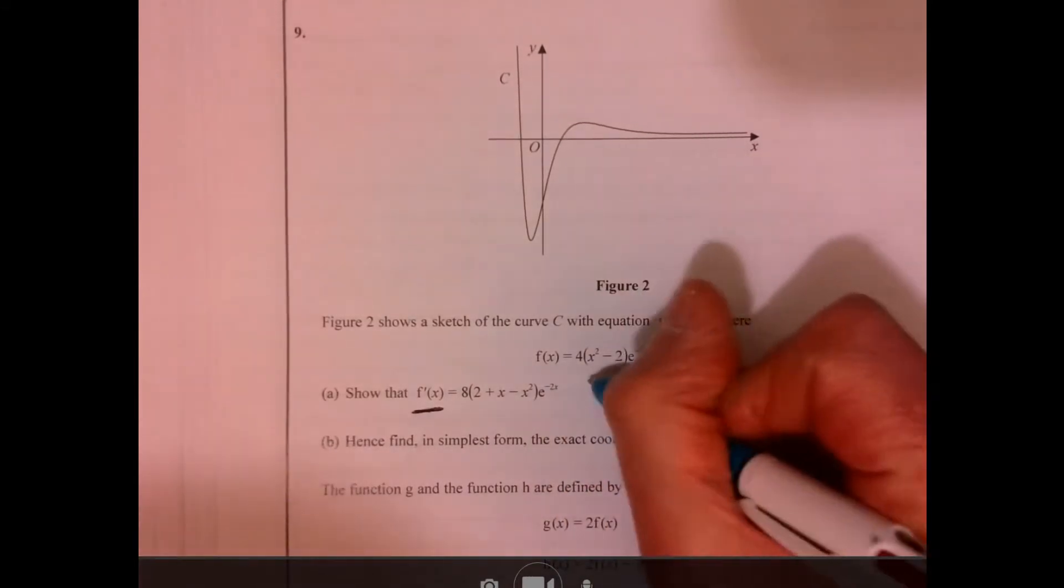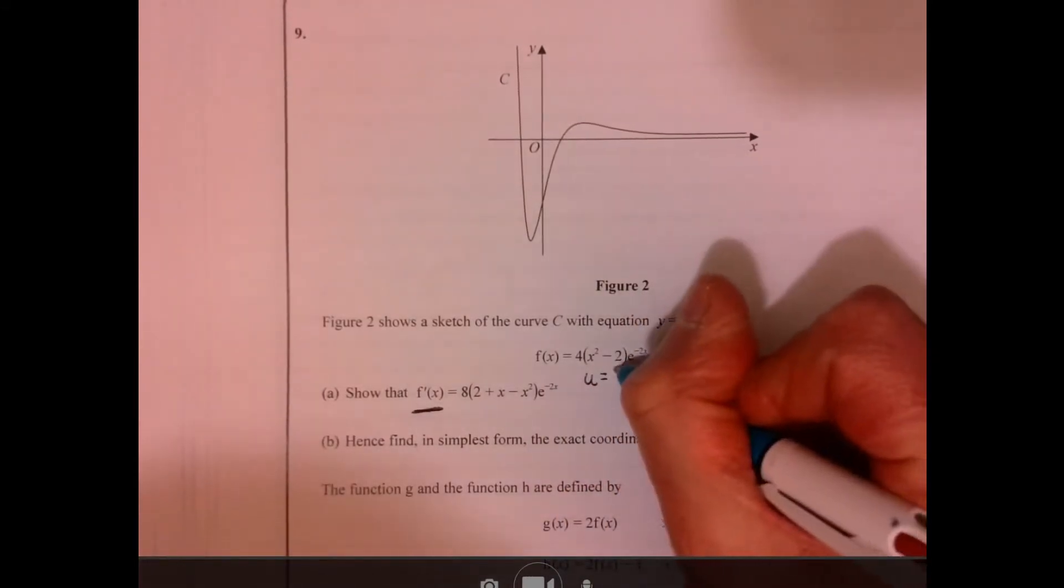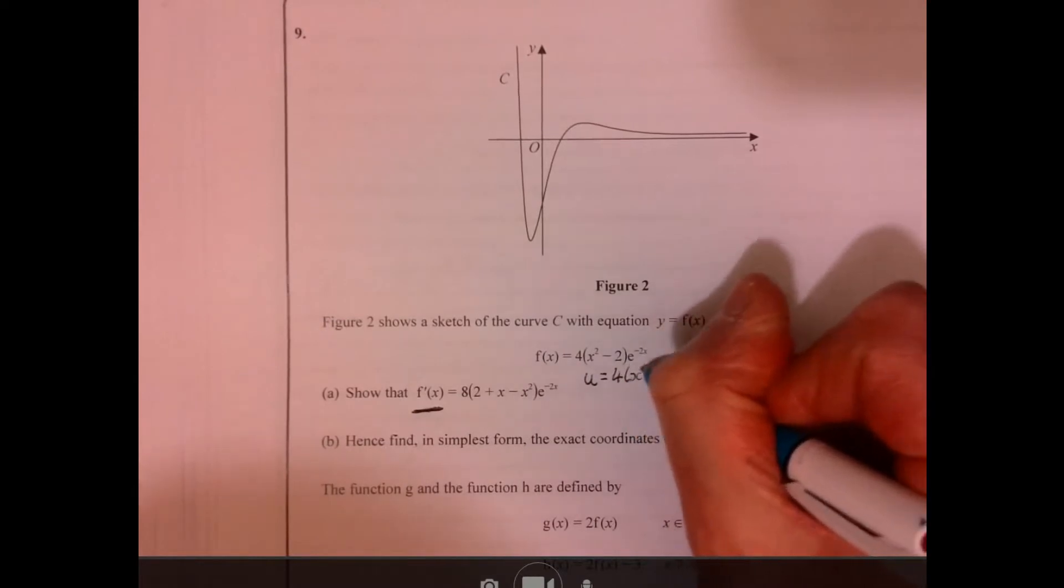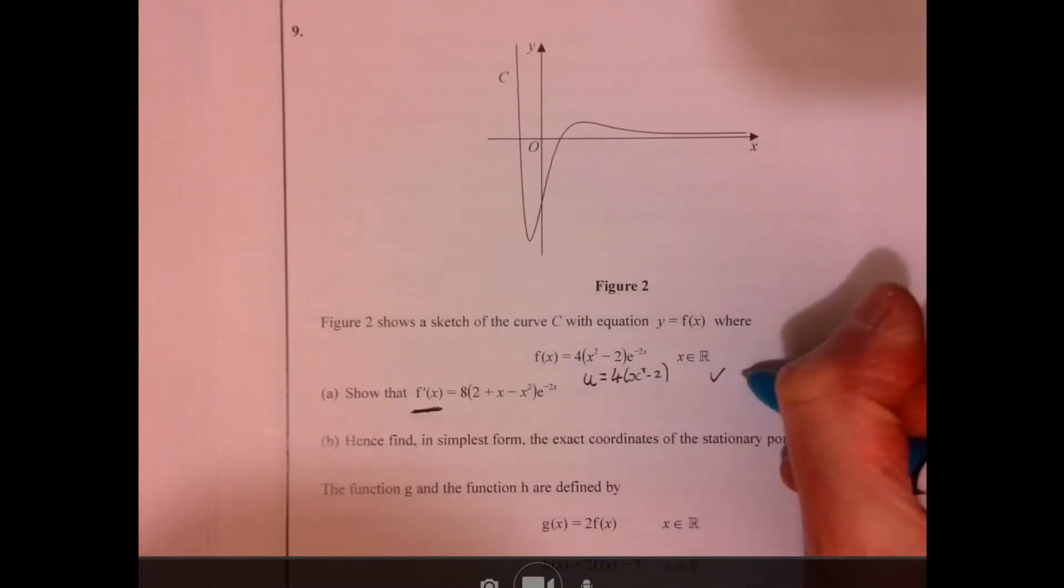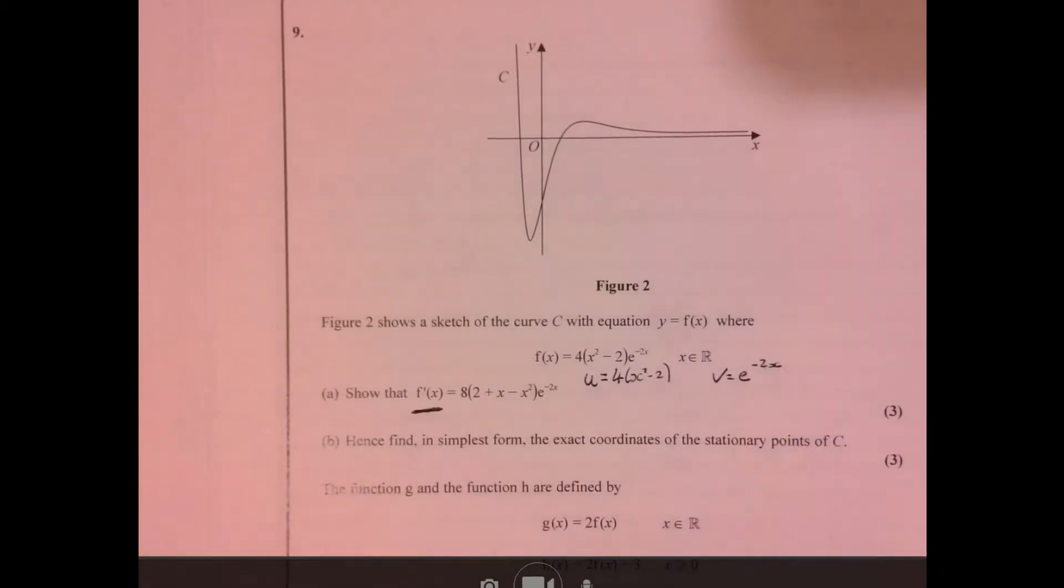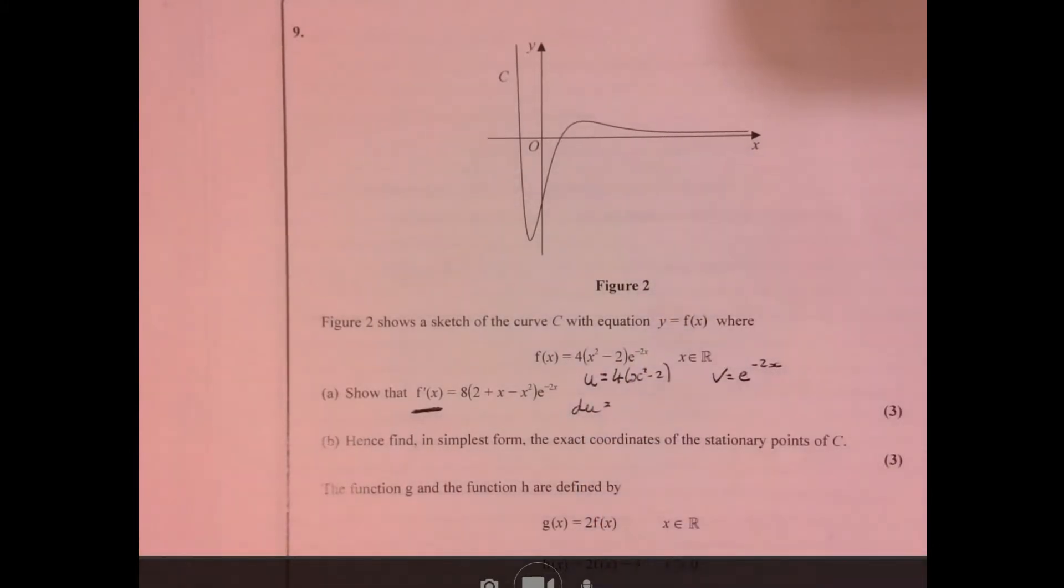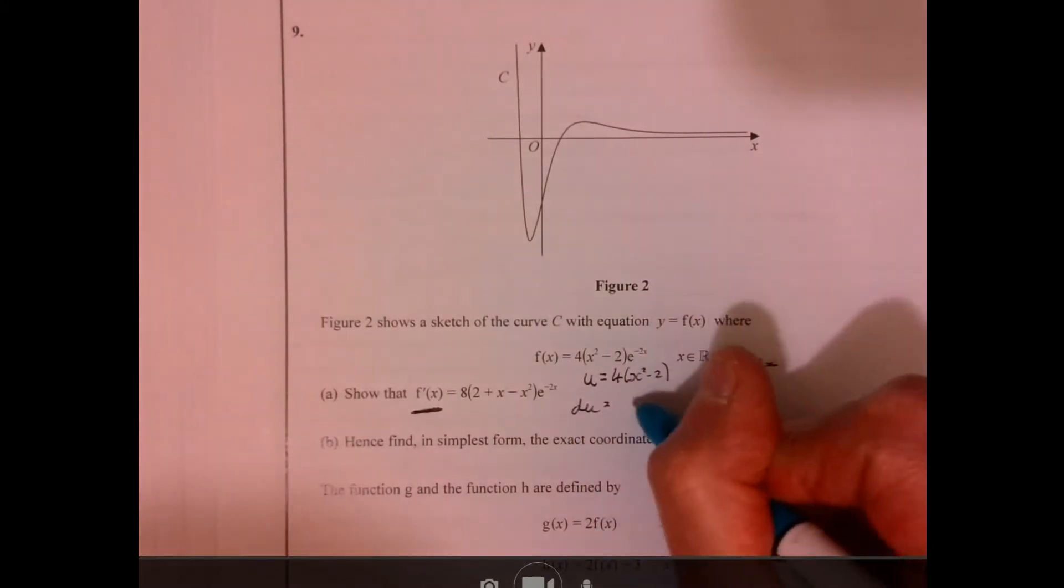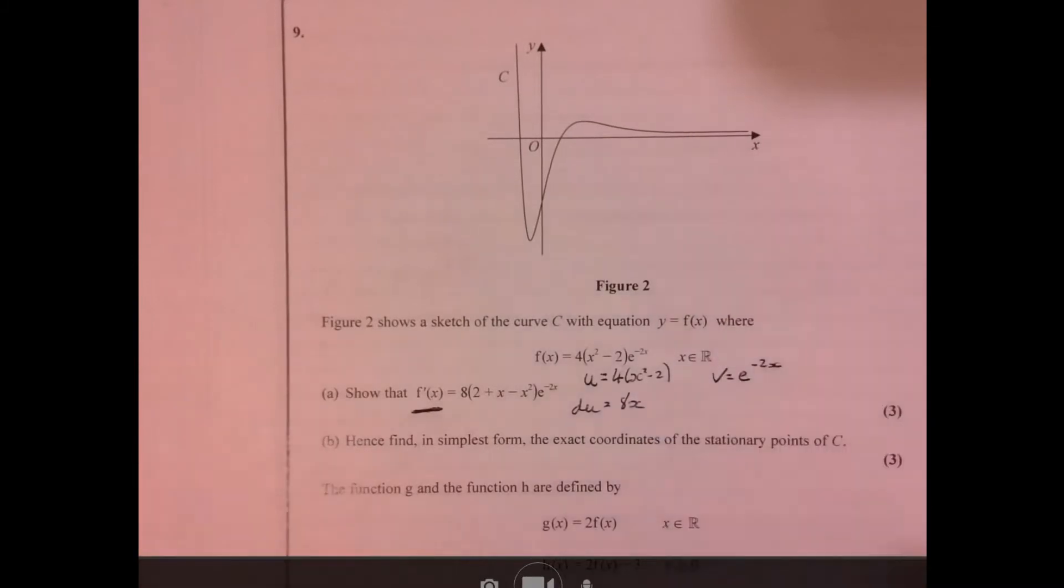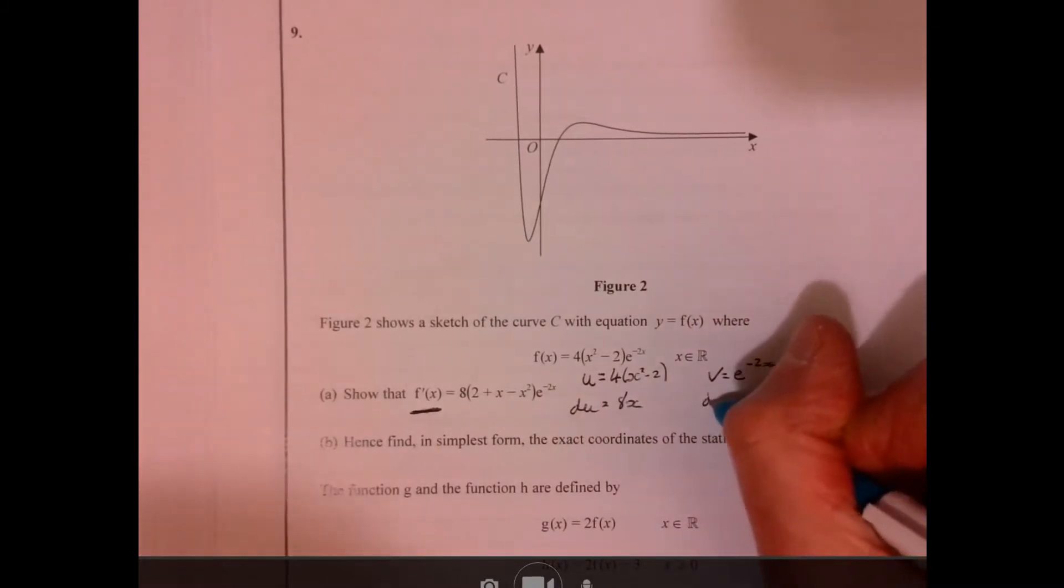Let's say u is equal to the first part of that. I'm going to say v is equal to e to the minus 2x. So let's work out what du is. That's just going to be 8x. And let's work out what dv is.